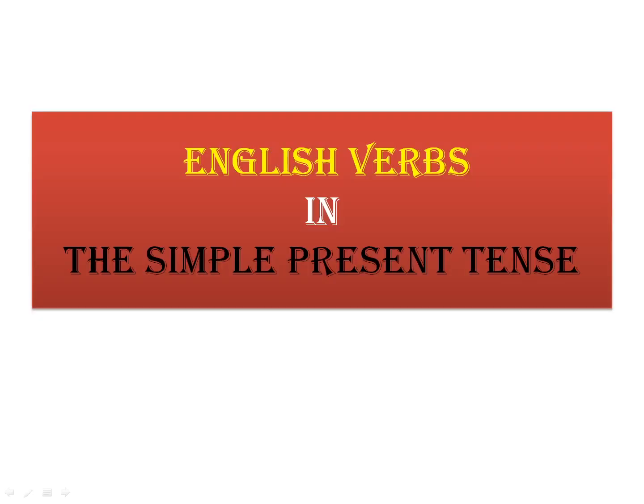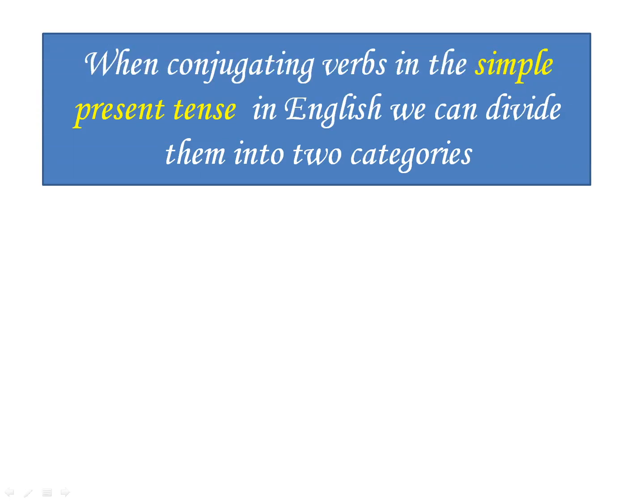Today we are going to look at English verbs in the simple present tense — how we conjugate verbs in English in the simple present tense. This is a tense about what happens every day, every week, every month, now and then. It talks about habit, things we do every time, and we sometimes use adverbs of frequency.